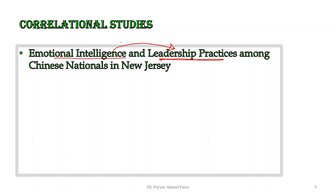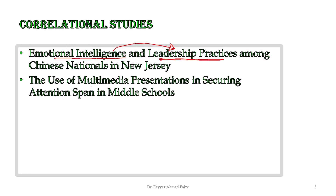The next example is the use of multimedia presentations in securing attention span in middle school. This topic has two variables: one is the use of multimedia presentations, which the researcher will be applying in different forms, and the second variable is attention span.